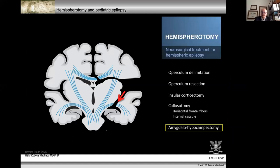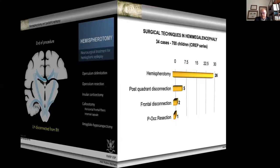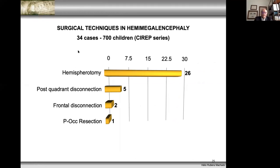Typically in this technique, from the inferior circular sulcus of the insula you resect the hippocampus, amygdala, and parahippocampal gyrus. But in the last four or five years, I've chosen to resect the temporal lobe instead, to avoid potential problems with intracranial hypertension related to ischemic changes, as I will show in a moment.